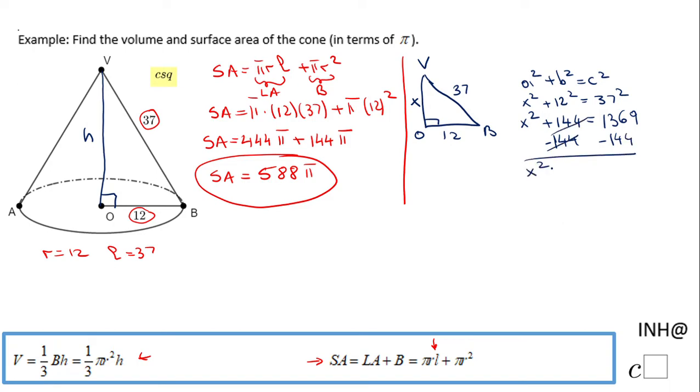I'm going to subtract 144 from both sides and I end up with x² equals 1225. For finding x we're going to just need to take square root and that will be 35. The x is 35, but again this x in our case is nothing else than the height. The height of this cone is 35.